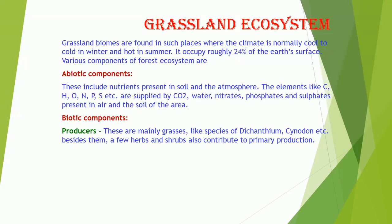Abiotic Components of the grassland ecosystem include nutrients present in soil and the atmosphere. Elements like C, H, O, N, P, S, etc., are supplied by CO2, water, nitrates, phosphates, and sulfates present in the air and soil of the area.